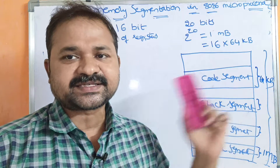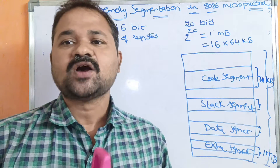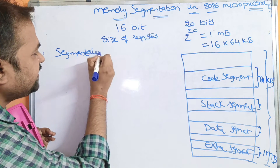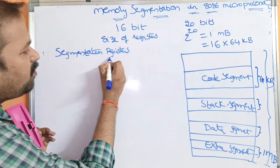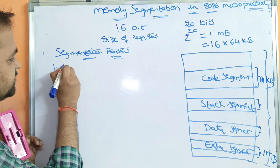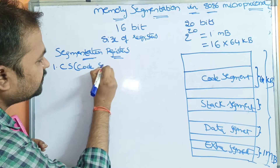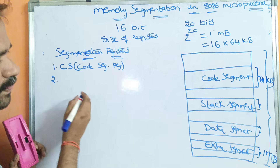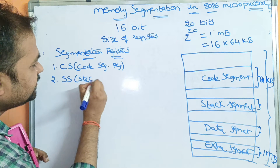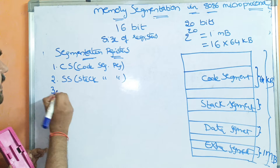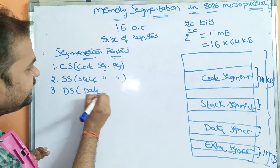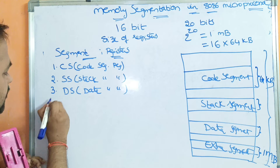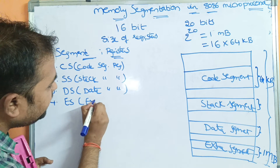In order to store the addresses, we use segmentation registers as well as offset registers. Mainly, we have 4 segmentation registers. The first is CS, which stands for Code Segment Register. The second is SS, which stands for Stack Segment Register. The third is DS, which stands for Data Segment Register. The fourth is ES, which stands for Extra Segment Register. We can also call these segment registers.